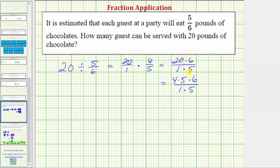5 over 5 equals 5/5, or 5 divided by 5, which equals 1. So 5/5 simplifies to 1/1. Now we can multiply and our fraction will be in lowest terms. The numerator is 4 times 6, and notice the denominator is just 1, and therefore this simplifies nicely to 24, which means 24 guests can be served with 20 pounds of chocolate.